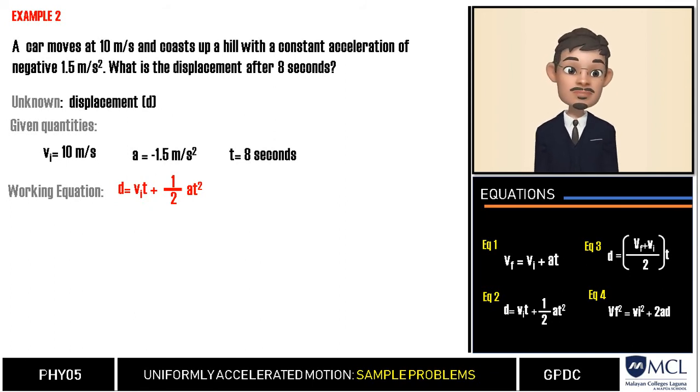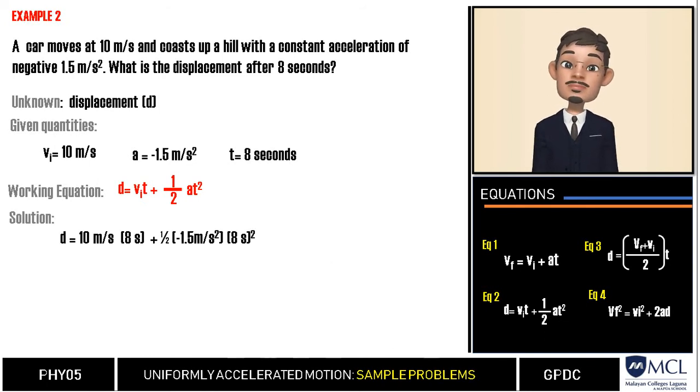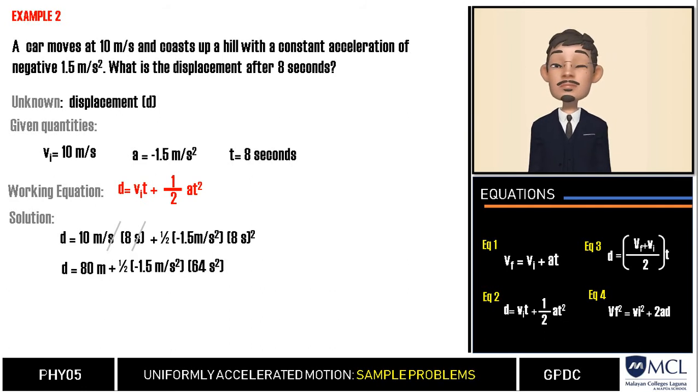Now that we identified the equation, we will substitute the values. We will solve as indicated in the operations. 10 meters per second times 8 seconds is 80 meters. Notice that we cancel already the second, plus one-half multiplied by the product of negative 1.5 meters per second squared times the square of 8 seconds, which is 64 seconds squared.